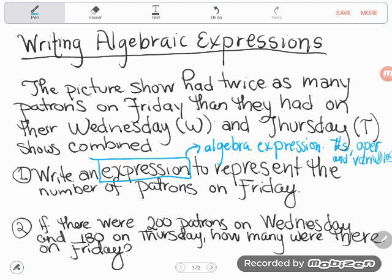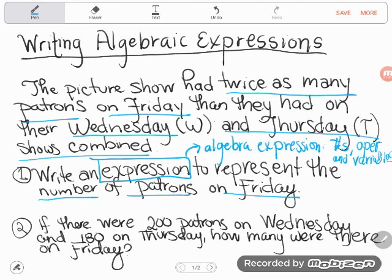We'll put in numbers if we know numbers, we'll put in operations what to do with those numbers, and we'll put in variables. What are we writing an expression for? We're writing an expression to represent the number of patrons on Friday. The picture show had twice as many patrons on Friday than they had on their Wednesday and Thursday shows combined. So if you combine Wednesday and Thursday, Friday would still have twice as many patrons as that.